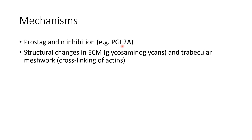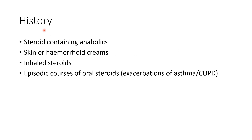The possible mechanisms of steroid-induced glaucoma include prostaglandin inhibition — that is, inhibition of PGF2-alpha. It can also be due to structural changes in the extracellular matrix due to glycosaminoglycans, or in the trabecular meshwork due to cross-linking of actins.